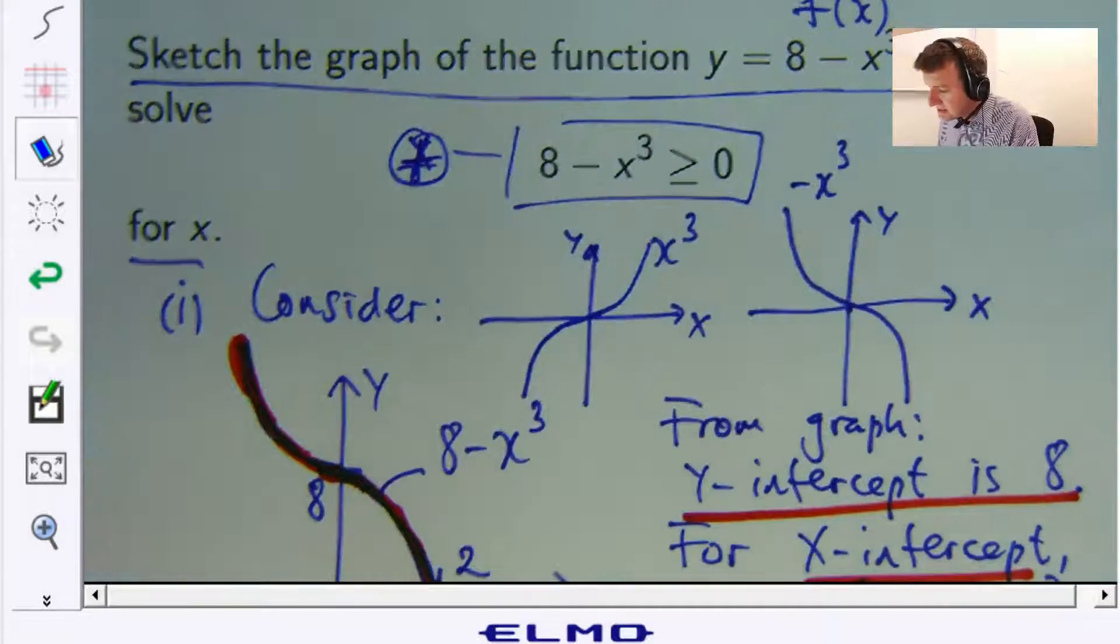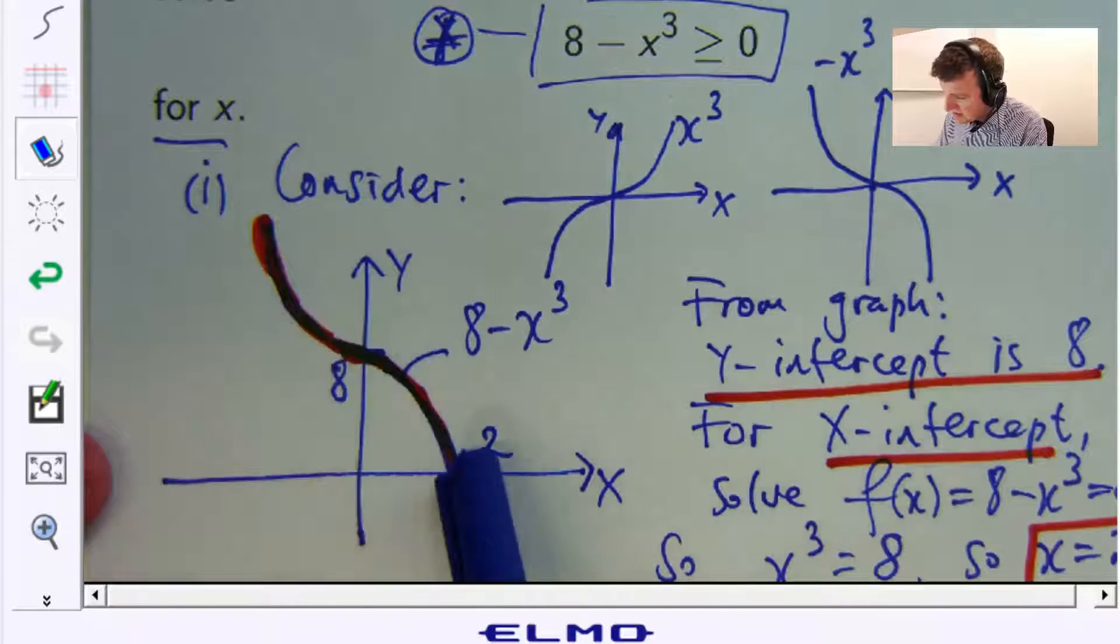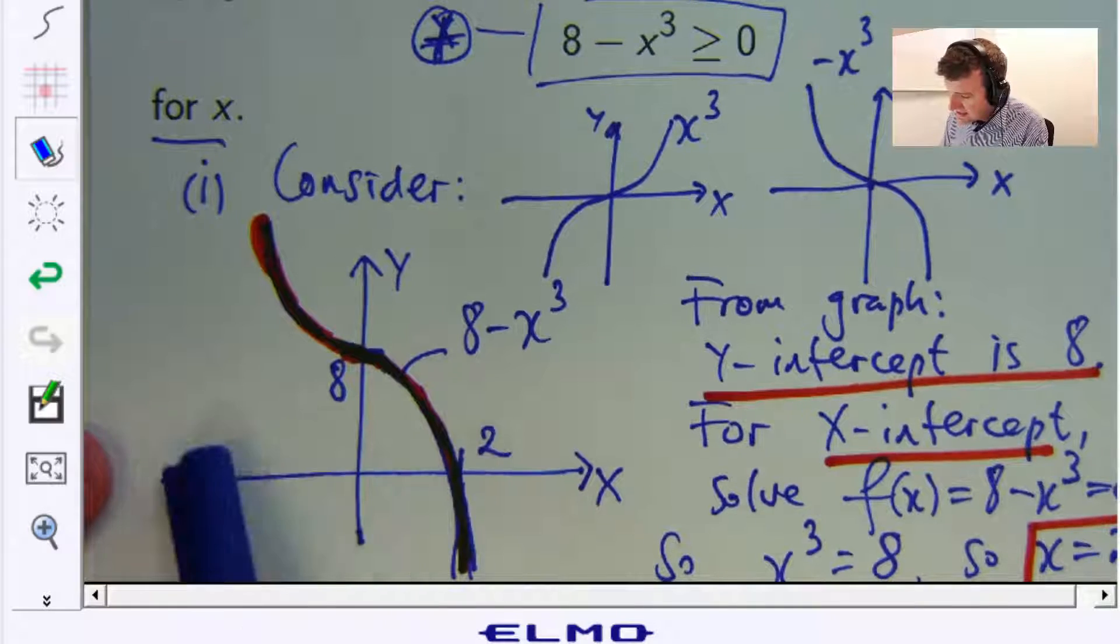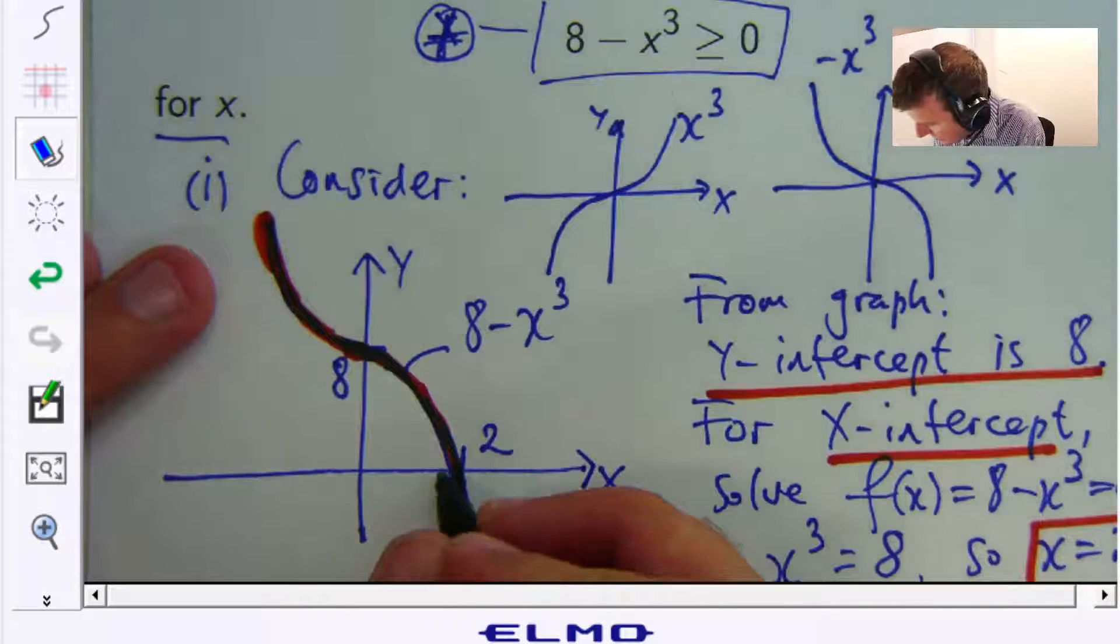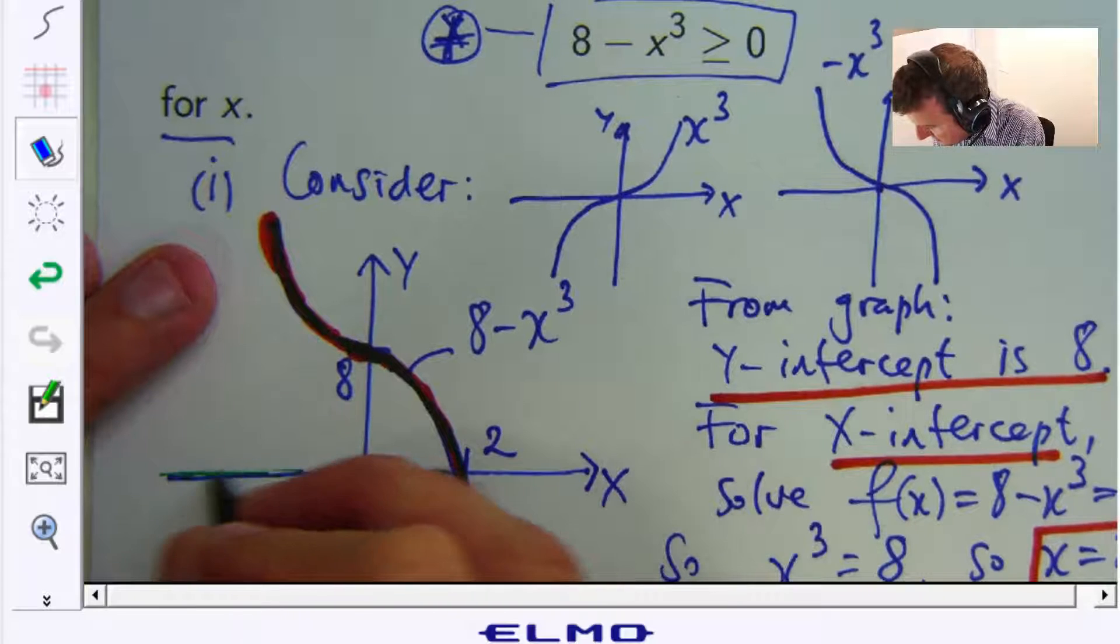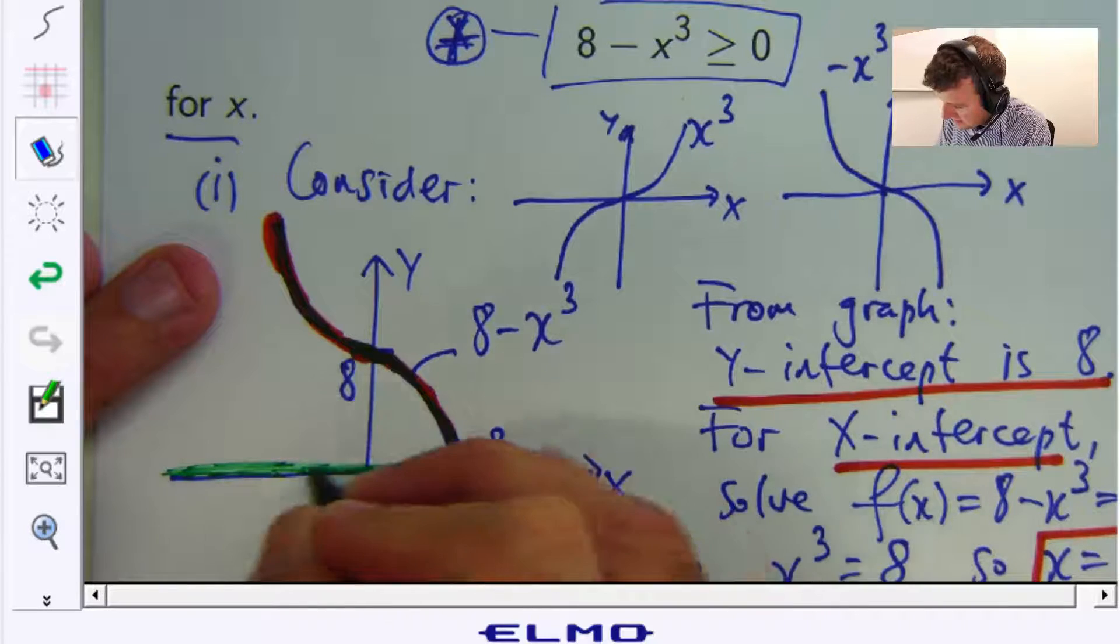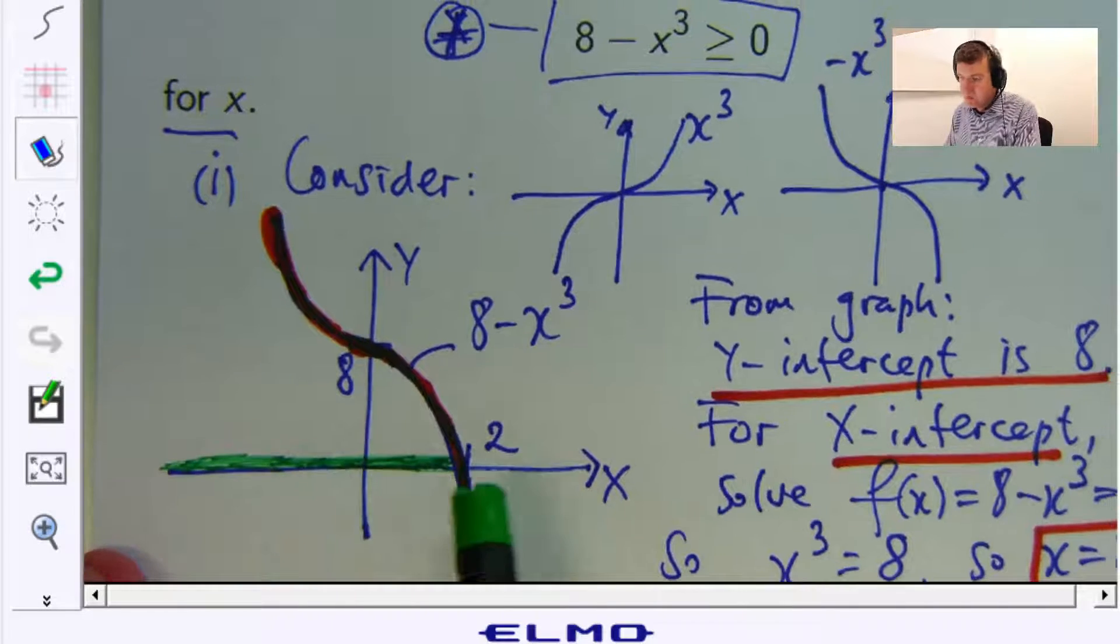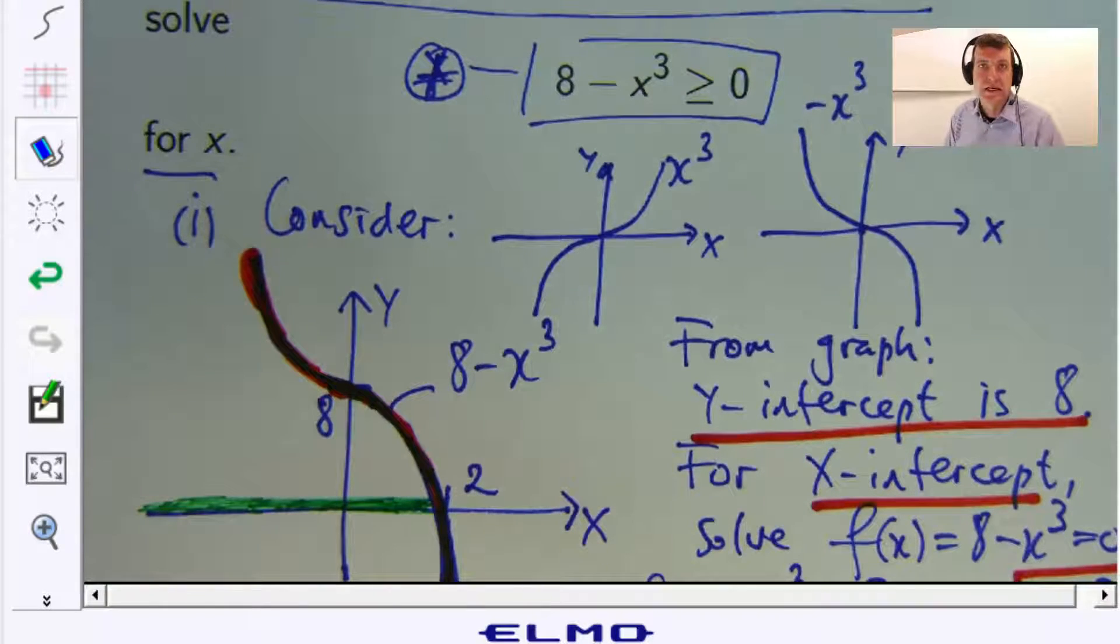You can see from the graph, this is the part of the graph that lies on or above the x-axis. And the corresponding x points are down here. So let me just colour them in using my green pen. Alright, so that's our interval of interest. Any x-point in here will satisfy the inequality star, will be a solution to star.